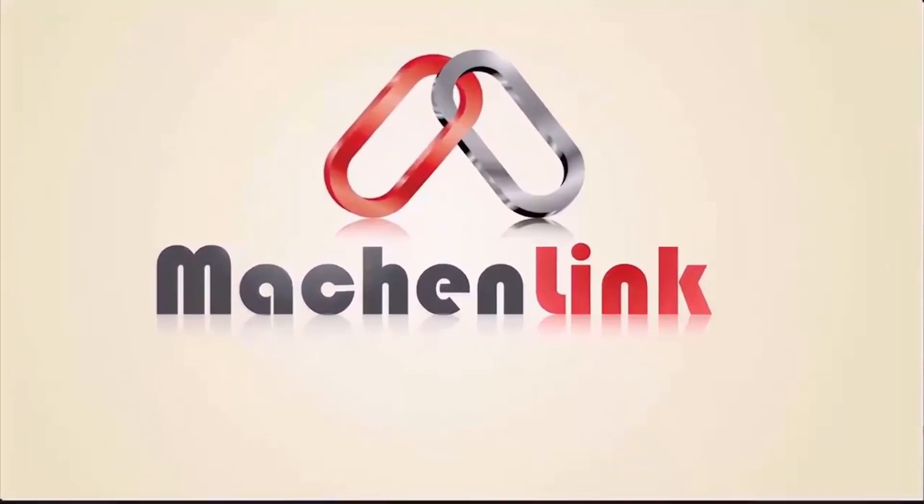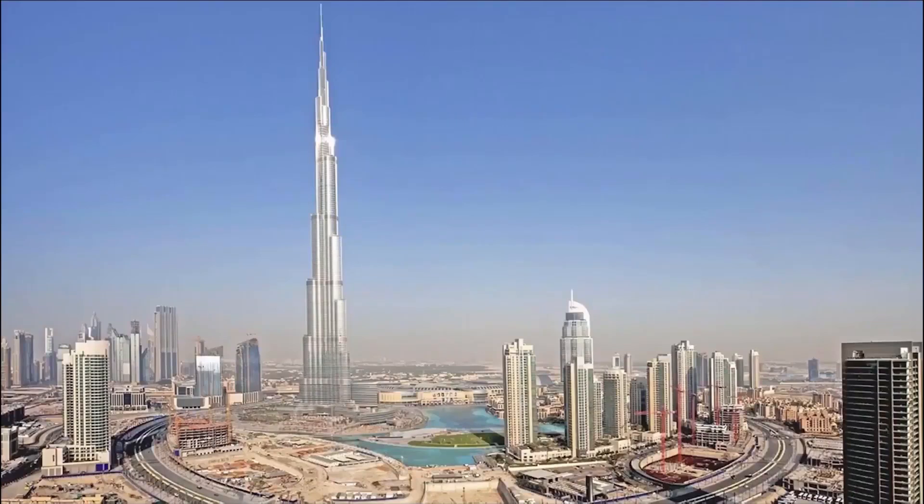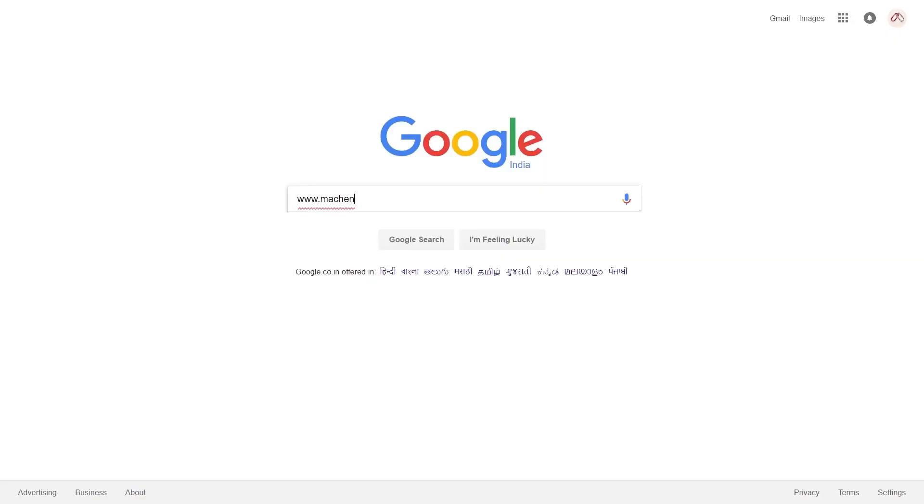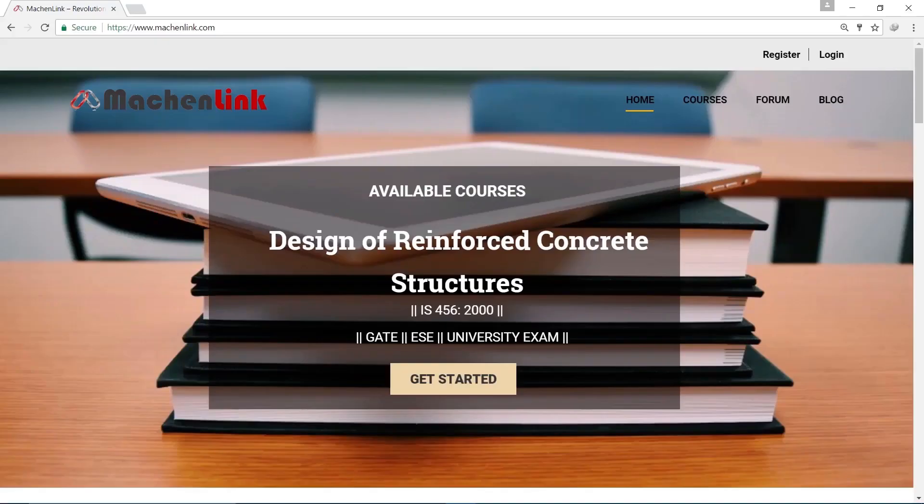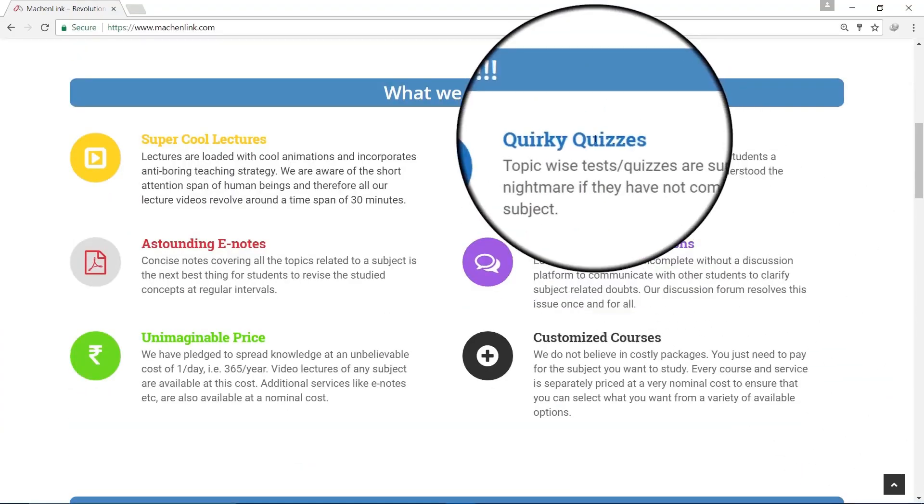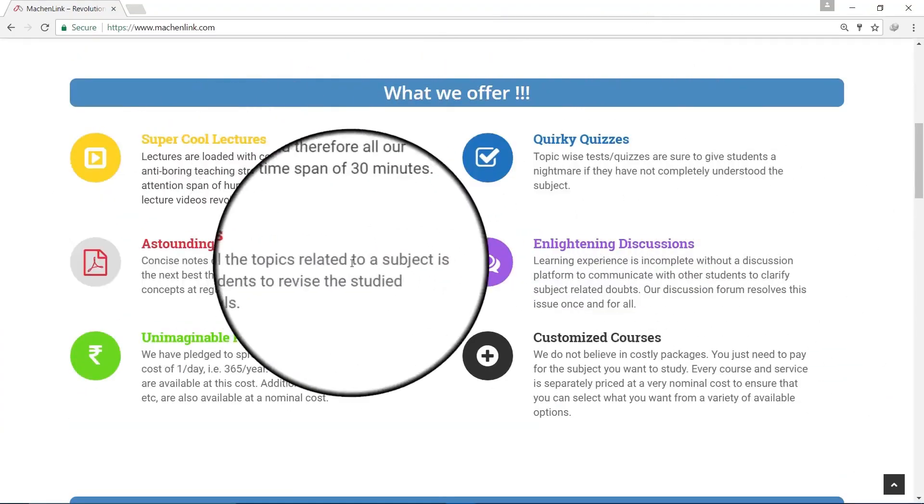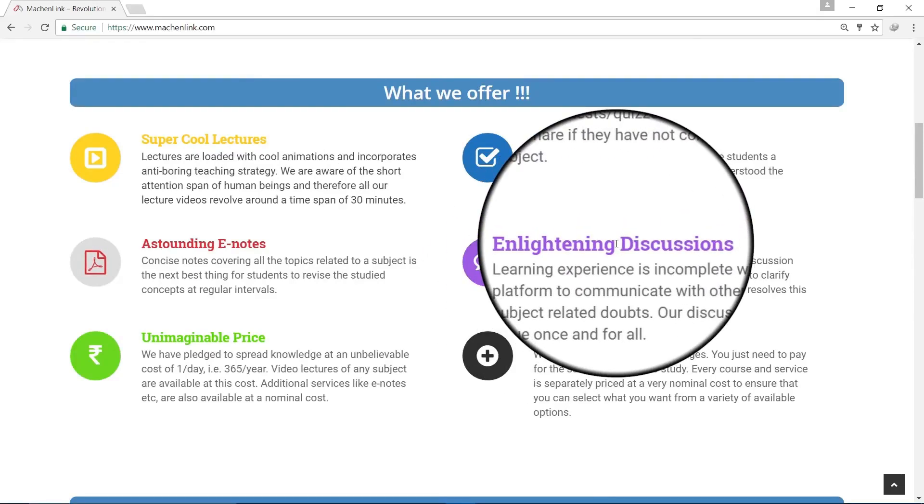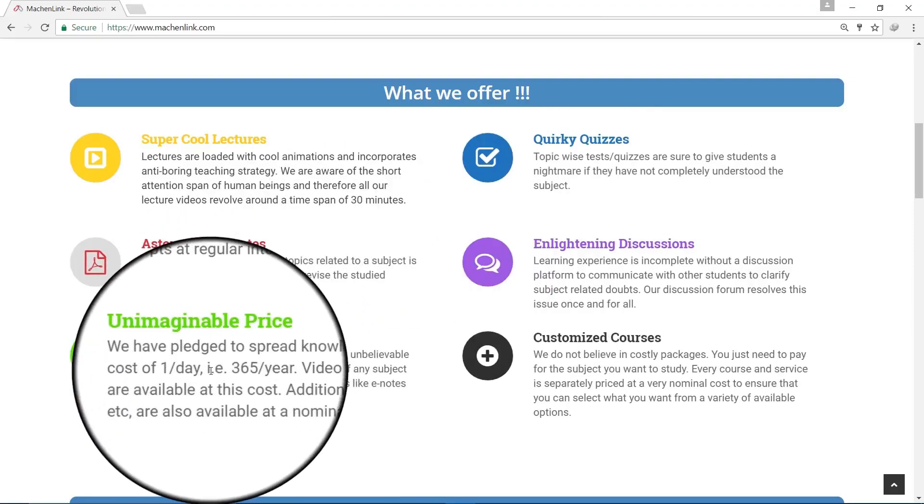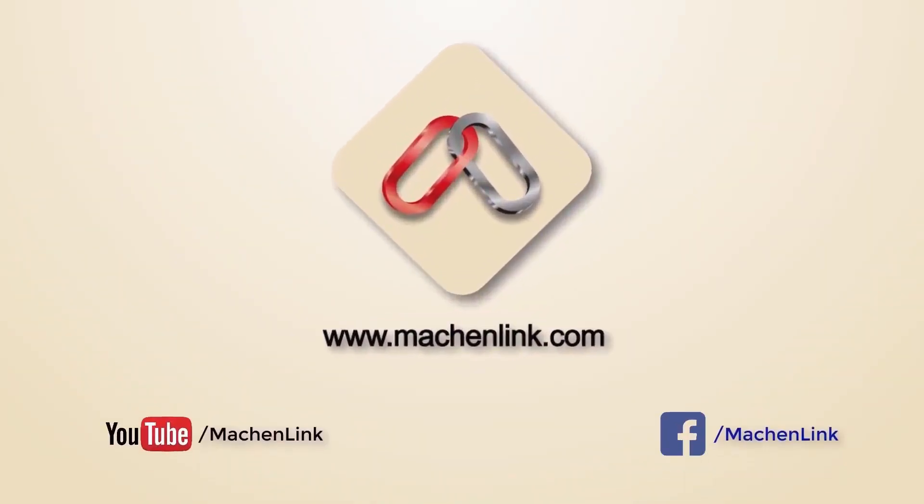Hello everyone, welcome to MachenLink. Before starting this lecture I would like to inform you that this is a demo version of our full course. You can access the full course at our website machenlink.com with many other features like quizzes after every lecture, e-notes, and discussion forum to discuss any doubts you may have. All courses are provided at an unbelievable starting price of rupee 1 per day, that is rupee 365 per year. Further, we go by the name MachenLink on Facebook and YouTube, so you can reach us there too for any query.